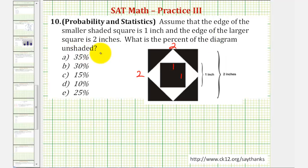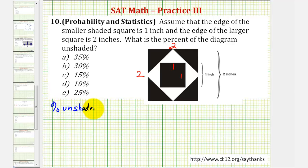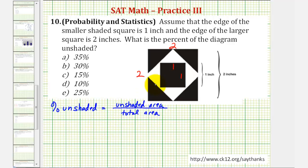To find the percent unshaded, we'll have to find the unshaded area and then divide by the total area. So the percent unshaded is equal to the unshaded area divided by the total area. We'll actually discuss two methods for finding this percentage.